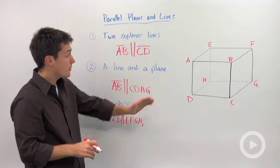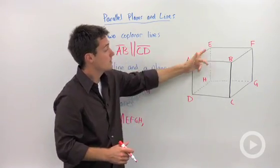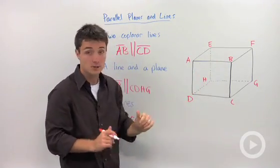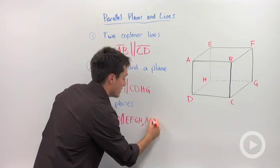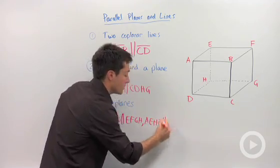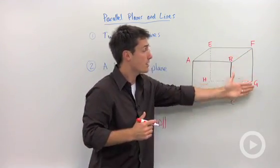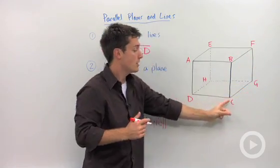But we could also consider the other two pairs. So we could say this side face AEHD is parallel to this other side face BFGC.